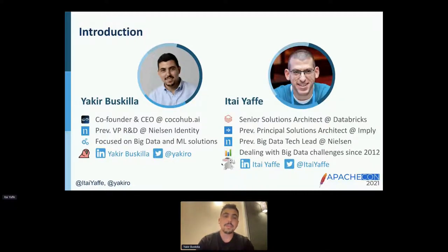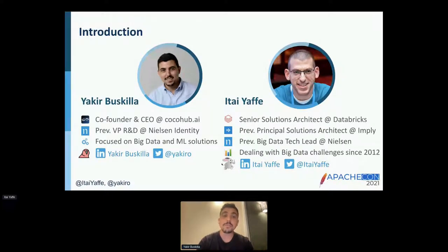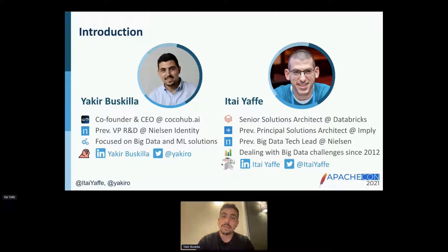My name is Yakhir. I'm currently the co-founder and CEO at Cocoa BI. Previously, I was leading R&D for Nielsen Identity, mainly focusing on big data and machine learning solutions. With me today is Itay, who is currently a senior solutions architect at Databricks. Previously, he was a principal solutions architect at Impli, and before that a big data tech lead who worked with me at Nielsen. He has been dealing with big data challenges for quite some time.